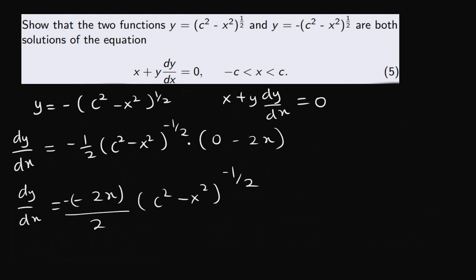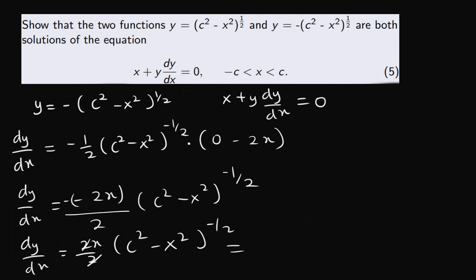So dy over dx equals x multiplying c squared minus x squared to the power of minus half. Now that we know this, we just have to substitute into the differential equation to see if it satisfies it.